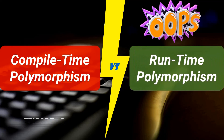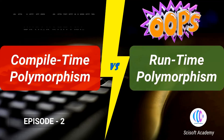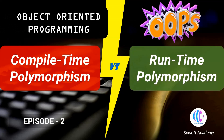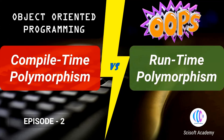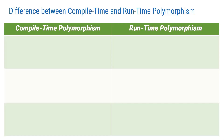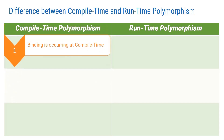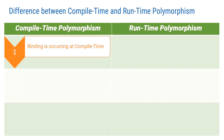So we will talk about basics of object-oriented programming. Polymorphism is one of the paradigms or pillars of OOP. In this video, we will talk about a detailed comparison. Compile-time polymorphism and run-time polymorphism is the basic difference we'll explore.